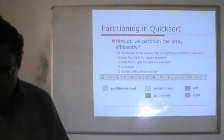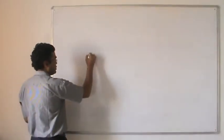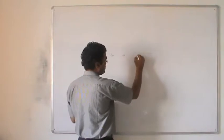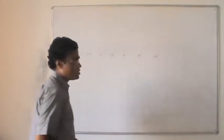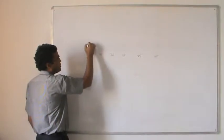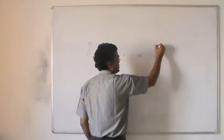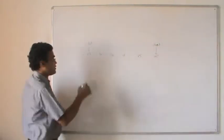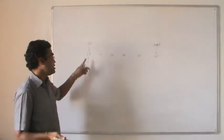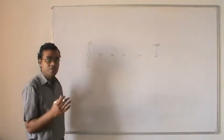Before proceeding further, let's look at one example of how quicksort works. Suppose we have elements: 37, 10, 36, 18, 35, and 45. We take one index pointer called 'left' and another index pointer called 'right'. We also take another pointer called 'location', which is also the pivot element. We are taking the first element as the pivot element here, though we can take any element from the middle or the last side.